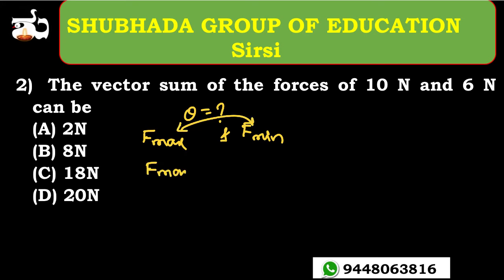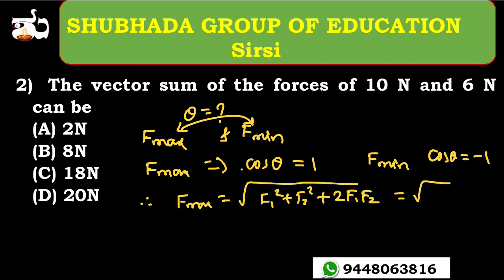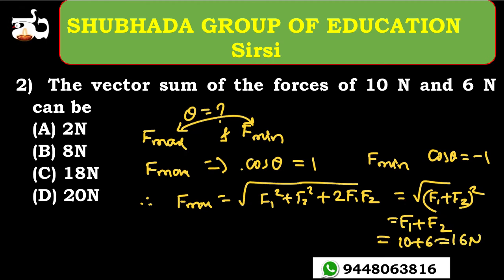You get the maximum force when cos theta equals 1, and the minimum force when cos theta equals minus 1. For maximum: F_max equals square root of (F1 squared plus F2 squared plus 2·F1·F2·cos theta) with cos theta = 1, which simplifies to F1 plus F2 equals 10 plus 6 equals 16 Newton. The only valid option is 8 Newton.